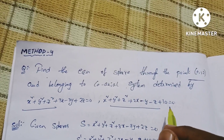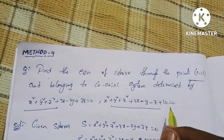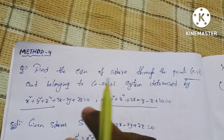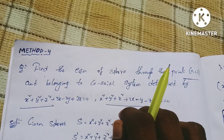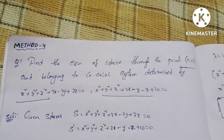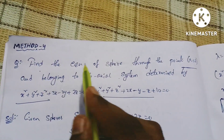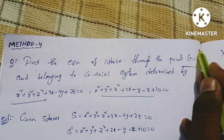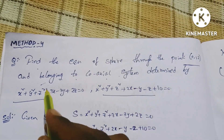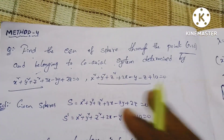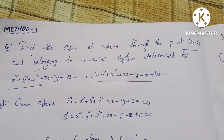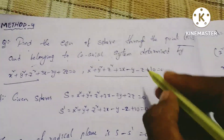In the beginning of the video, we will use the limiting points method. The limiting points method is the easiest method. The point is the same as the spheres. We will use the coaxial system of the spheres. Let's find the equation of the sphere through the point that belongs to the coaxial system determined by the given spheres — the first sphere and the second sphere.